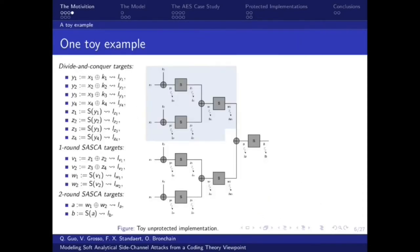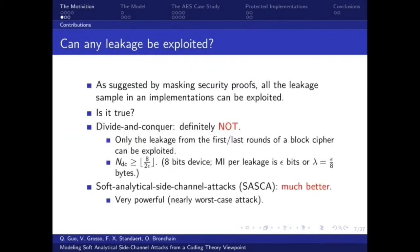We can extend the previous computation graph to form a new toy example for our purpose. We have three layers of computation. The first layer includes four S-boxes whose leakages can be exploited by the divide and conquer approach. If we only consider the leakage of the S-box output, we have a univariate model. Otherwise it is bivariate. We can also have one round SASCA target that cannot be exploited by the divide and conquer approach by summing the output of two S-boxes in the previous round and letting it be the input of another S-box.